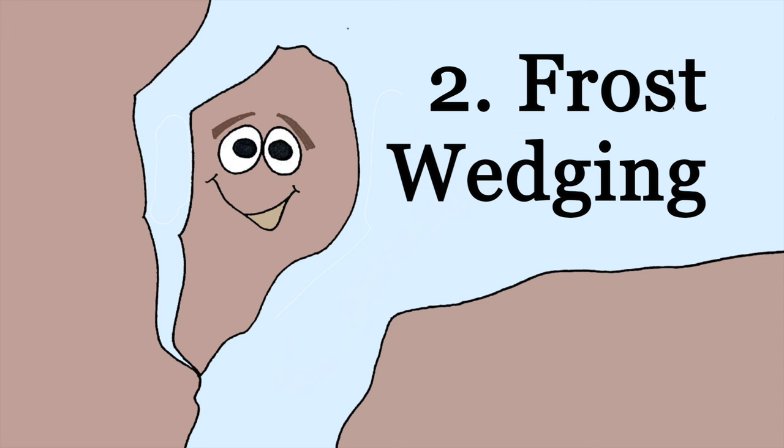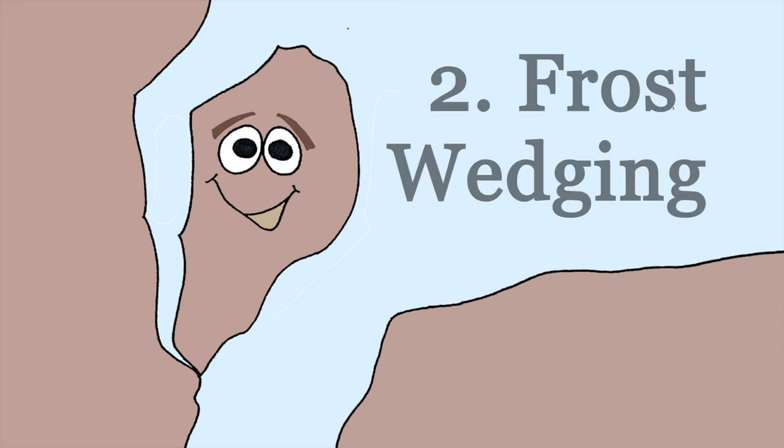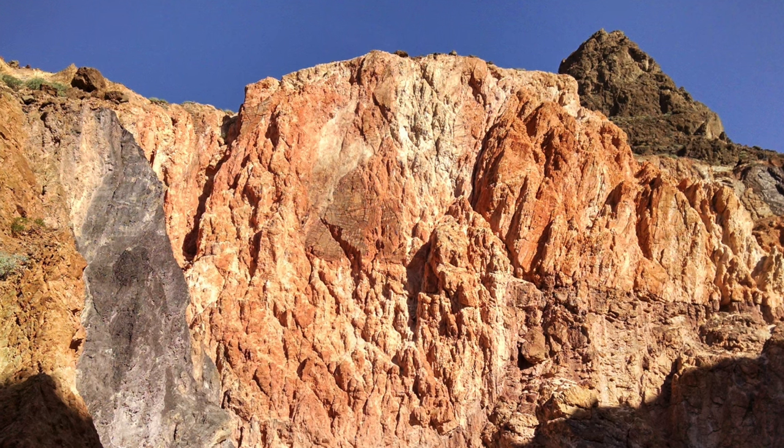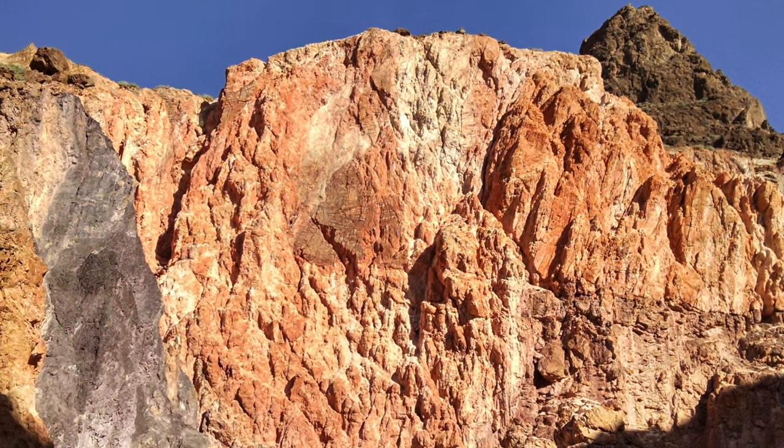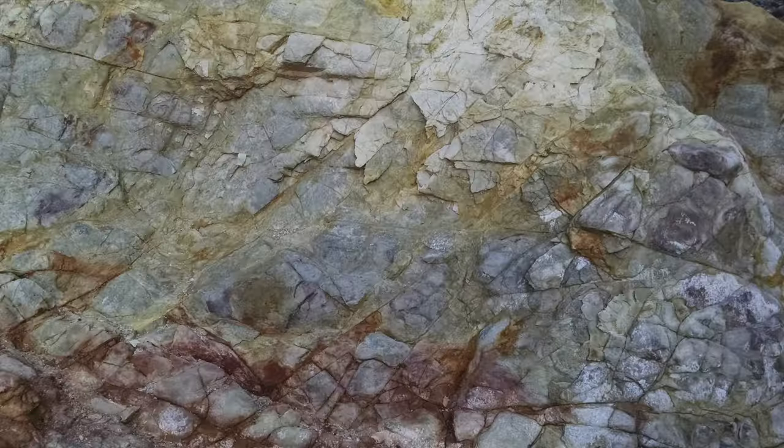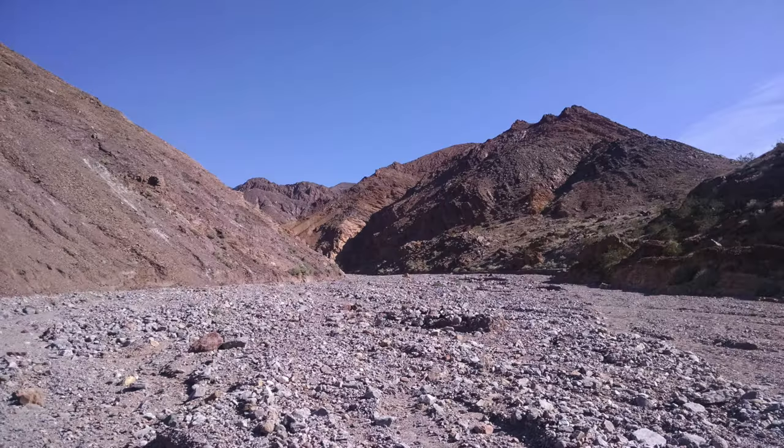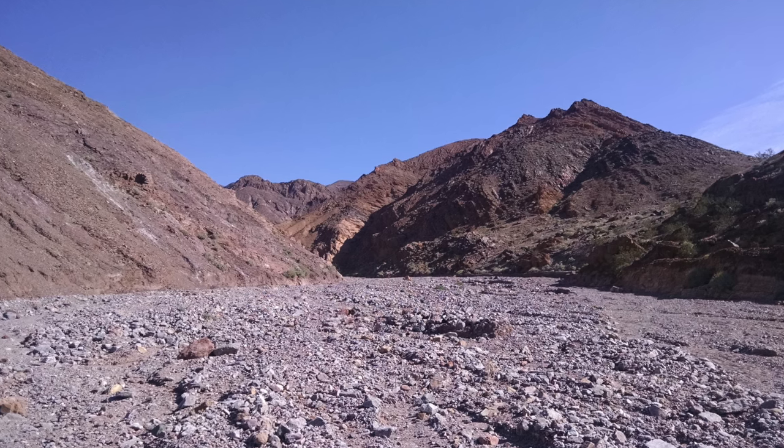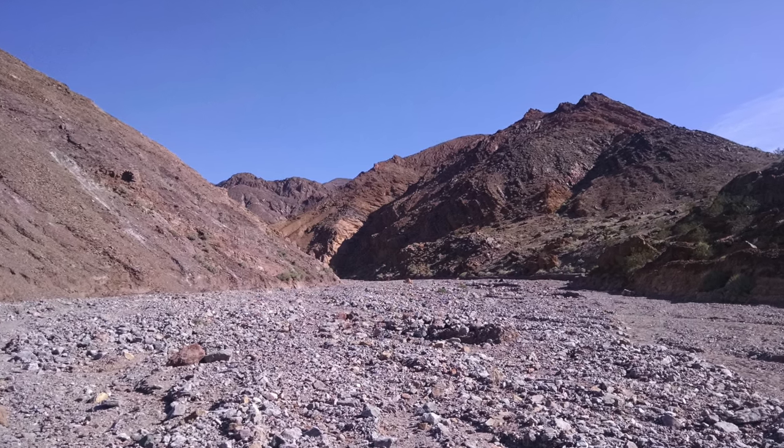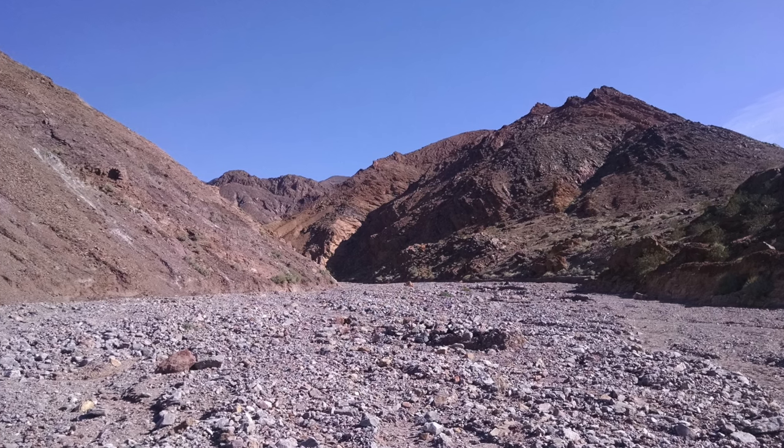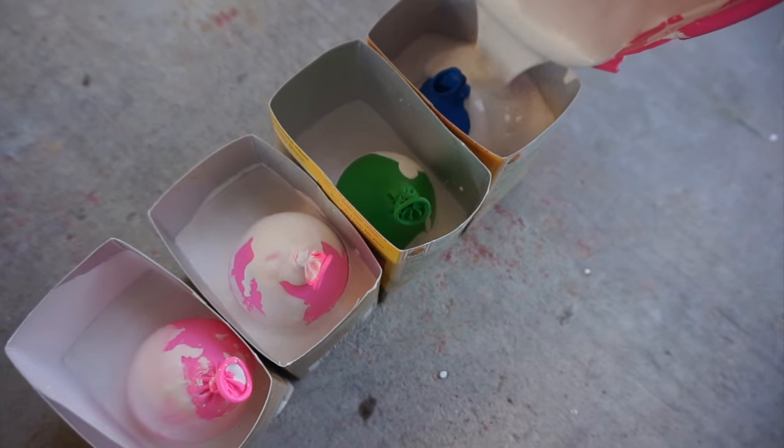Frost wedging is a type of weathering caused by water. Many rocks have small cracks and fissures in them. When water gets into these small cracks and it freezes, it can expand and actually break the rocks. All of the smaller rocks you can see that make up this dry riverbed were formed by weathering, and frost wedging was a big part of that process.